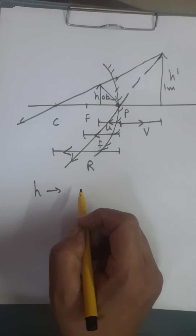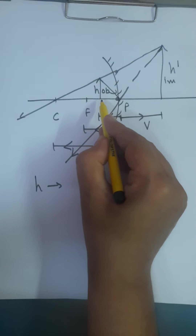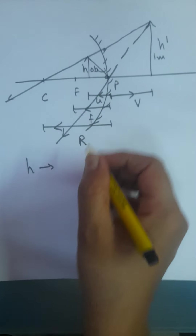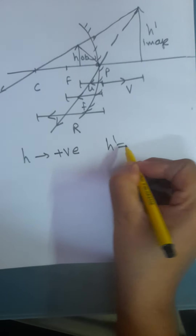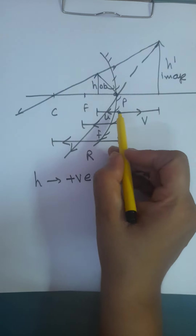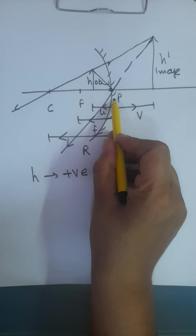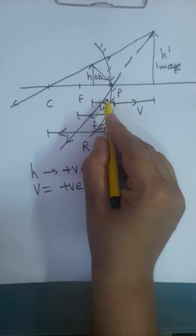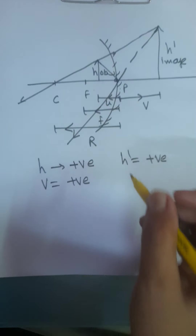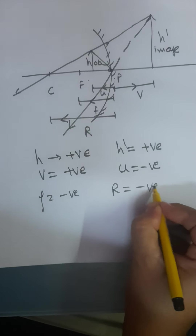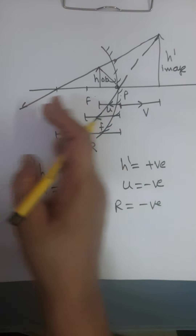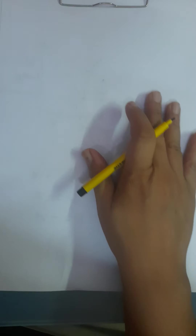Sorry for the disturbance children, let's continue. In this video, the same topic — object here is above the principal axis, so it should be positive. This image is also going above the principal axis, so this is also positive. V is going on the right-hand side from pole to image, so V is positive. U is going from pole to object, that is on the left side, so U is negative. F is going from pole to focus, so it is negative. R is going again to the left. So the rule is: whatever goes to the left side is negative, whatever goes to the right side is positive. I am also writing some conventions for you which you can learn and use in the numericals.